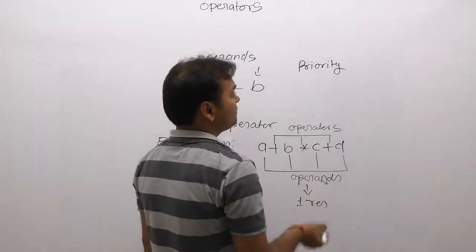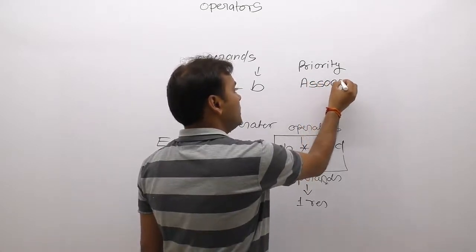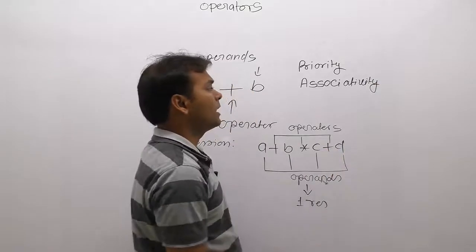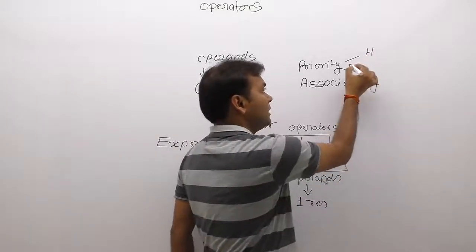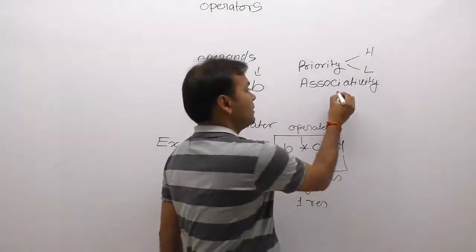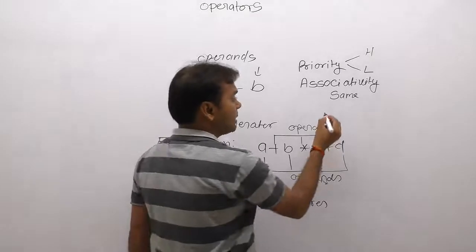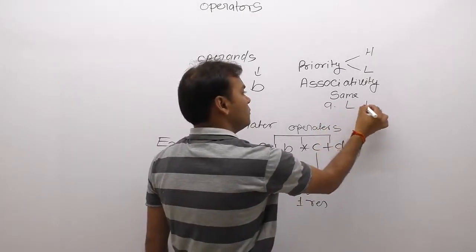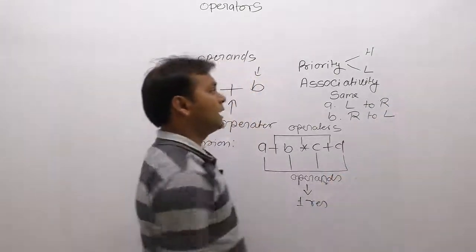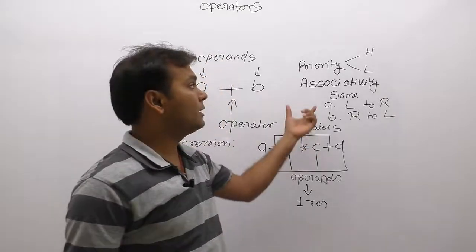First apply priority rules. According to priority rules, highest priority operators are solved first, then least priority operators. Third possible case: if priority is the same for more than one operator, then apply the associativity rule. According to associativity, any expression is solved either left to right or right to left. Associativity rule is only needed when priorities are the same.